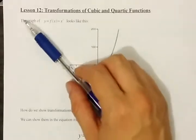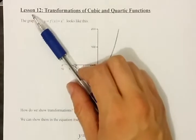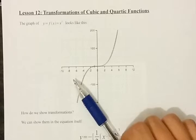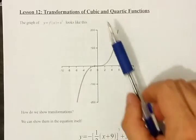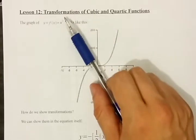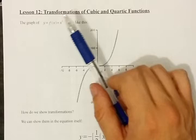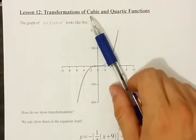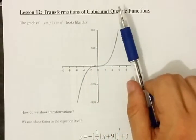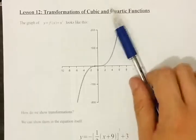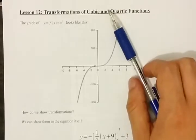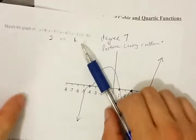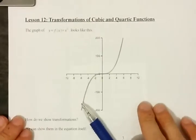Lesson 12 is something that I'm not a big fan of in this course, but it is in the curriculum, so we've got to do it. Now, you're familiar with how to do transformations. We're going to extend that to transforming x to the 3 and x to the 4. This is a completely different thing than the functions we were curve-sketching last lesson.